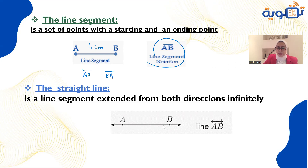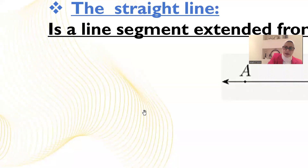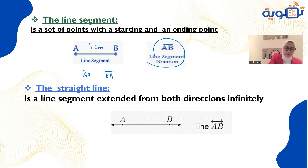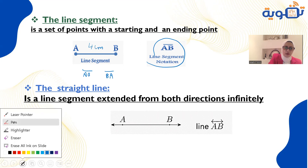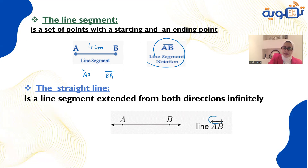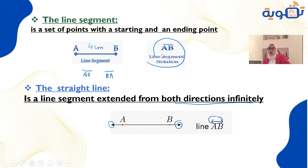The straight line looks like that and its name is line AB. The definition of a straight line is a line segment extended from both directions — it does not stop from either direction, which is why it has an arrow on both ends.